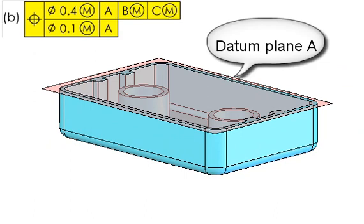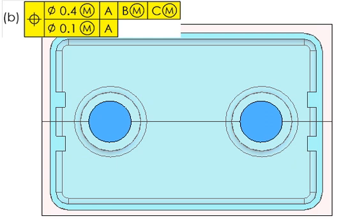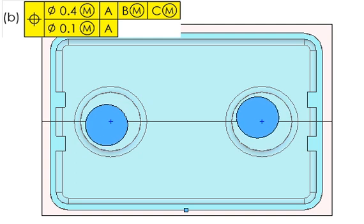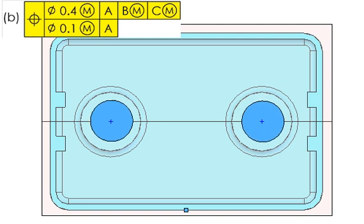By bringing down datum feature A, the perpendicularity of the two holes would be tightened up to within .1. So the holes can still move around as a pattern relative to datum planes established by B and C, but they have to remain perpendicular. That means the pattern could even rock as you're seeing here.